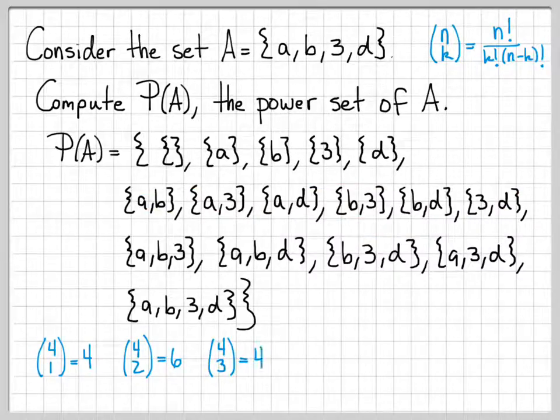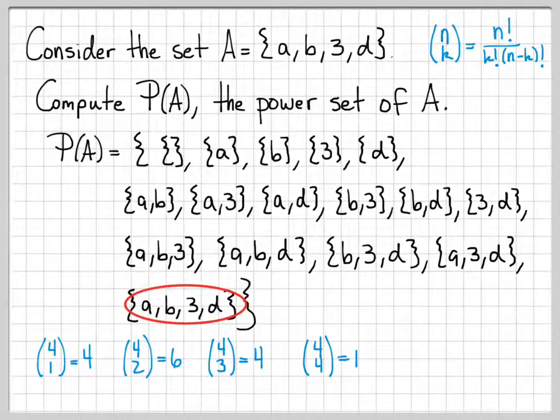Similarly, for four choose three, there are four ways to do that. If you actually plug n equals four and k equals three into this equation, you'll get the number four. And that's why I had four sets listed here. And then finally, four choose four, if you plug into this equation, you get one. And that's why I have just one set here.